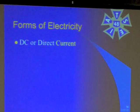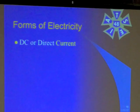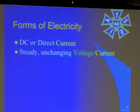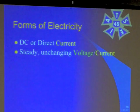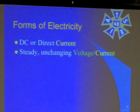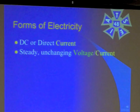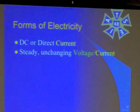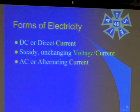We have two forms of electricity. The first kind is DC, or direct current. This is a steady, unchanging voltage and current on a line. It's 5 volts, 10 volts, 12 volts, 15 — it never changes. It just stays at that same value.